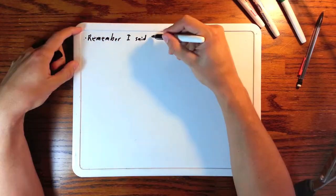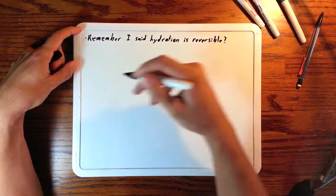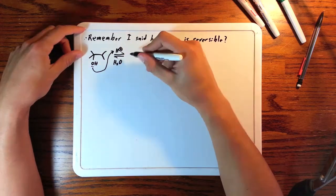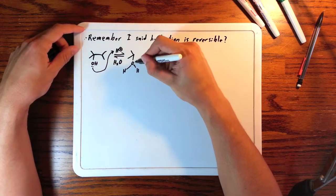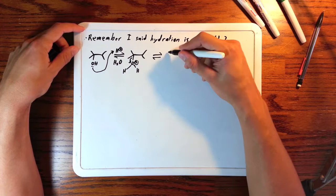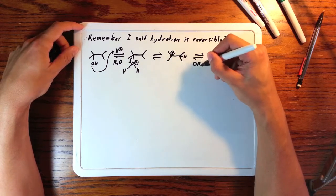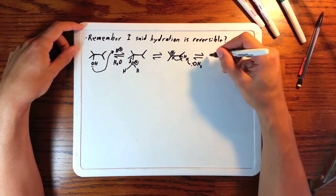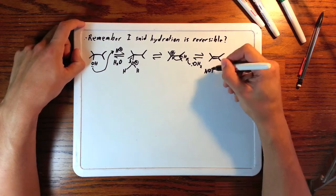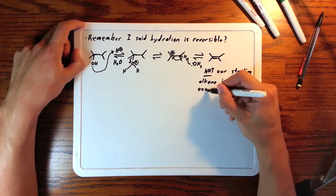Remember when I said hydration is reversible? This process is called dehydration. The alcohol can be protonated and then water comes off, giving us the carbocation we had in that example. But then water comes and pulls off that hydrogen and gives us this alkene, which is not what we started with in that example.